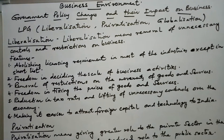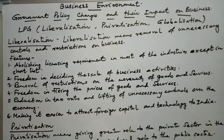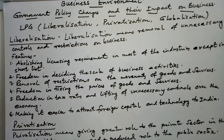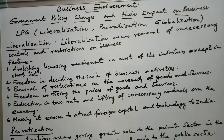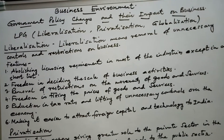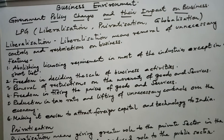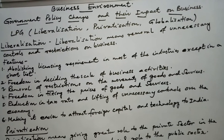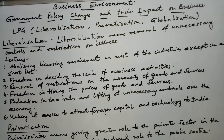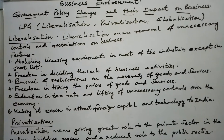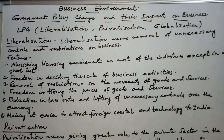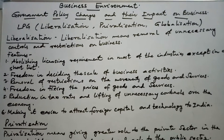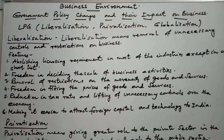The first feature of this policy was de-licensing. De-licensing abolished industrial licensing for all projects except for six industries. The government decreased the role of the public sector, and the government also announced increased investment. Liberalization policies were to be followed, along with privatization and globalization.